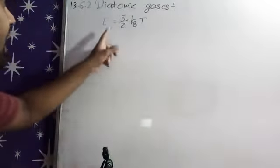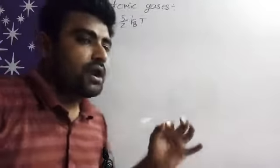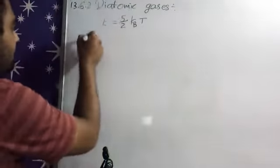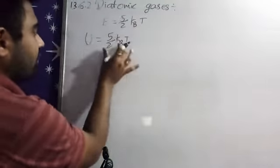So that's our energy for only one molecule. Now if we are having Avogadro numbers of molecules, then total energy of that number of atoms U is equal to 5 by 2 kBT, this is for only one.